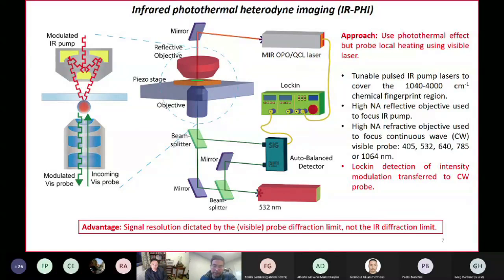Coming back to the counterpropagating geometry, you can see here that we're going to use a refractive objective where the numerical aperture can be very large. Consequently, the spatial resolution that one can achieve with this technique is limited by the visible diffraction limit, not the mid-infrared diffraction limit. So with this tabletop technique, you have a spatial resolution on the order of say 300 nanometers.